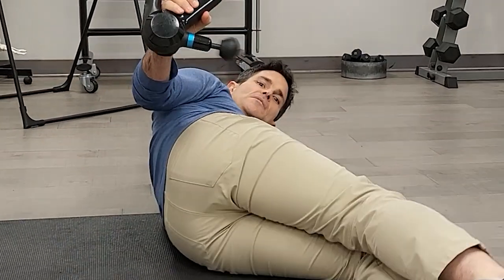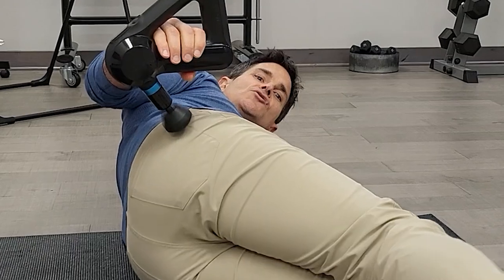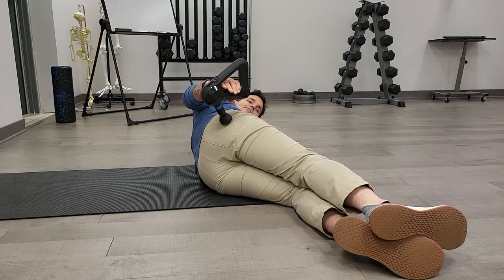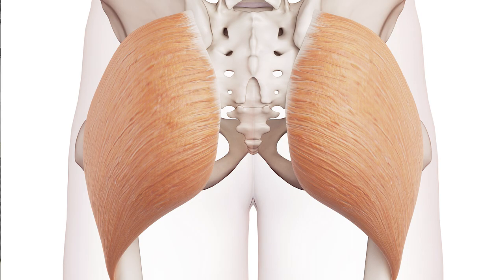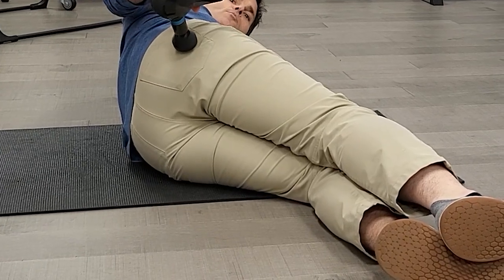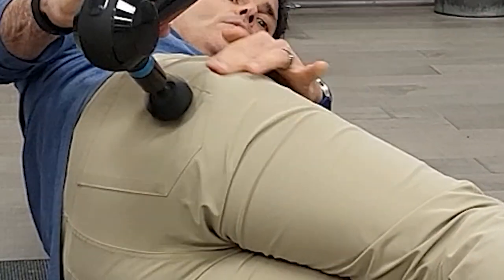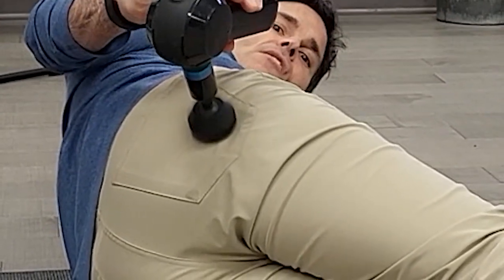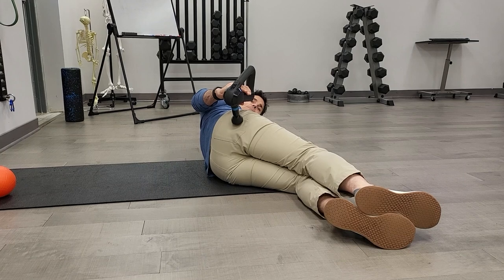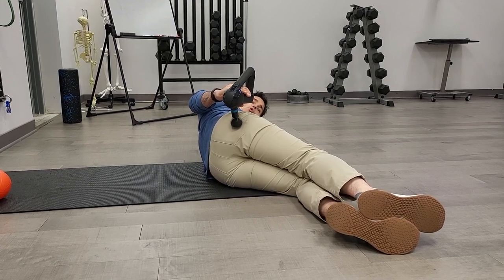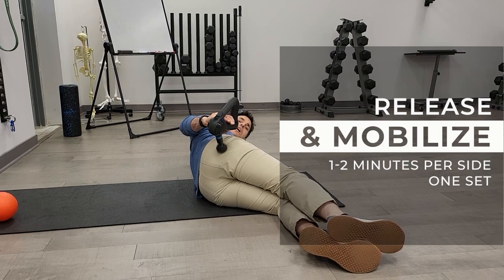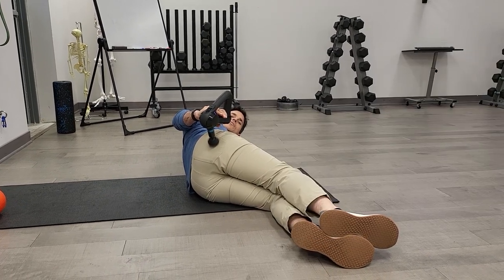Hold at the musculotendinous junction for up to 90 seconds. Lay on your side with the muscle disengaged — shorten it by bringing your hips into extension — then apply the gun at the tendon attachment. These muscles run diagonal from medial to lateral and high to low, so start at the low attachment point near the greater trochanter of the femur. Apply pressure for 30 to 90 seconds. The muscle will tense up initially, then stop reacting to the stimulus — that means it's becoming inhibited. Hold for another 20 to 30 seconds after that.